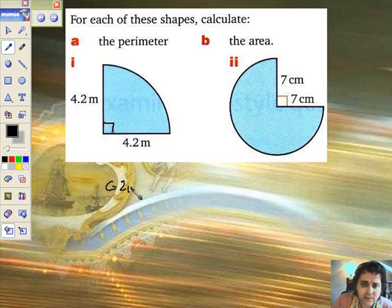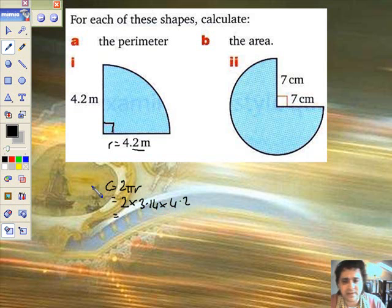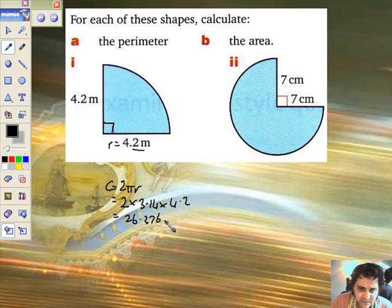C equals 2 pi r. I'm using that because the radius is 4.2. So 2 times 3.14 times 4.2. Remember, this is the circumference for the entire circle. So 2 times 3.14 times 4.2. And that gives us 26.376 metres because that's given to us in metres.